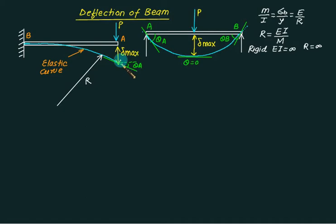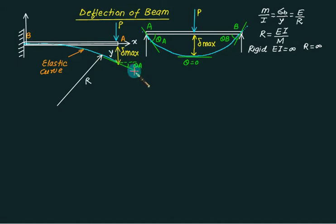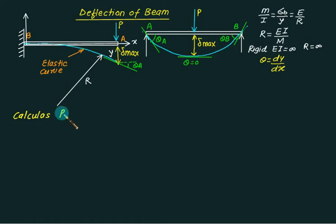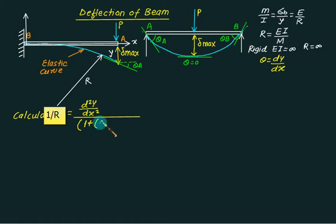We have to consider this value and we are interested to know it. So instead of delta, if we mark this value as y, then theta = dy/dx. If we assign this as the x-axis, then y will be the deflection and the slope dy/dx equals theta. From calculus, the radius of curvature R is given by: (d²y/dx²) divided by [1 + (dy/dx)²]^(3/2). That is the definition given by calculus.